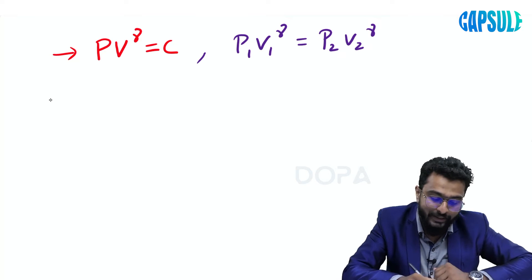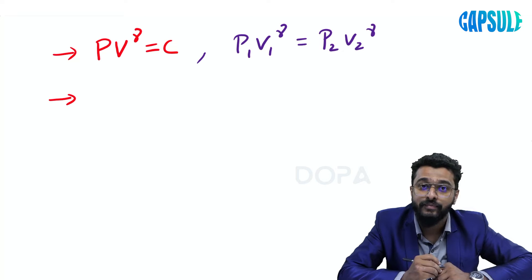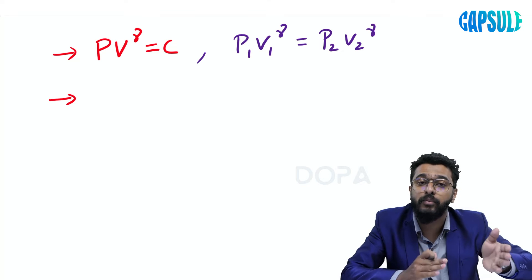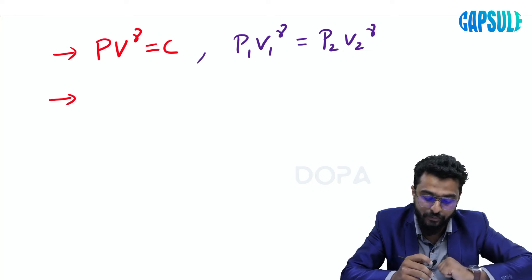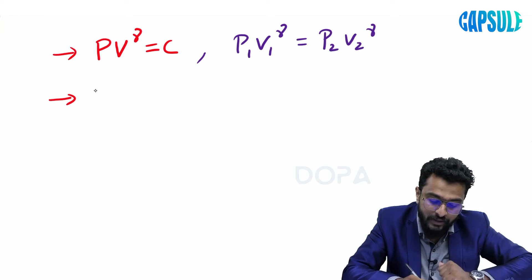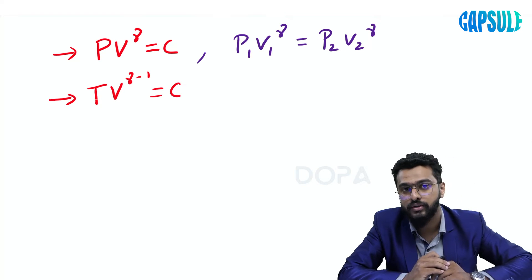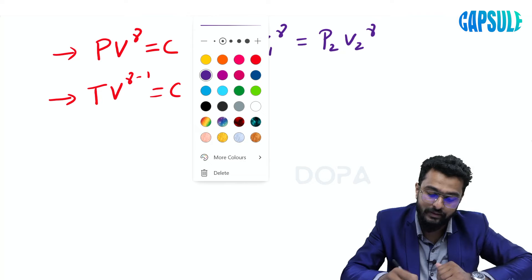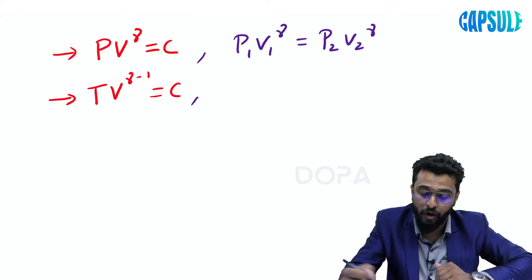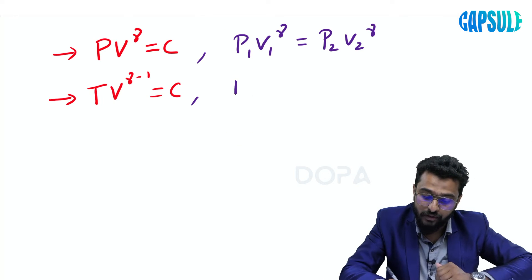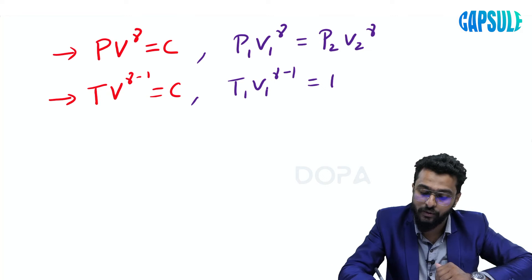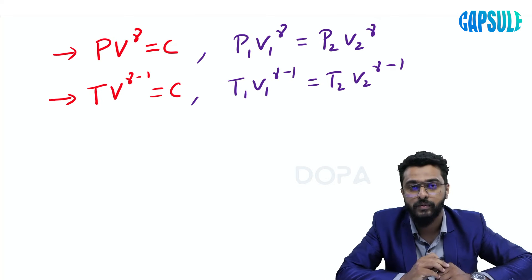The second relation is the temperature-volume relation in adiabatic process: T into V raised to gamma minus 1 equals constant. For solving problems, this becomes T1 V1 raised to gamma minus 1 equals T2 V2 raised to gamma minus 1.